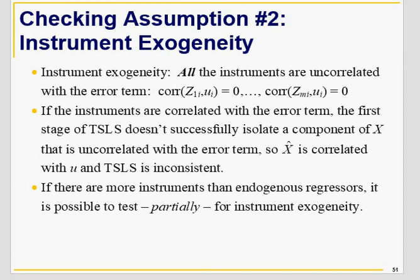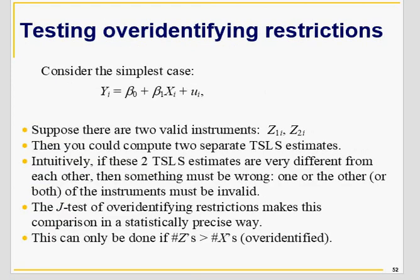The second condition is instrumental exogeneity: Z should be uncorrelated with U. The first condition concerned whether the instrument explains variation in X (relevance). Here, whether Z is exogenous or not depends on your model identification. If the number of instruments equals the number of endogenous regressors — that is, an exactly identified model — you cannot test exogeneity. If you have an over-identified model, you can test whether an instrument is exogenous.